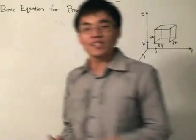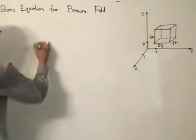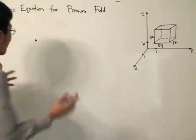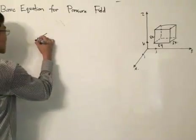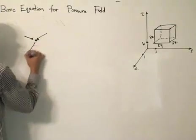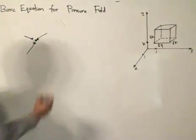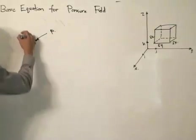We left off previously where we showed that pressure at a point in a liquid is the same regardless of direction. So whether it's the force acting in this direction, this direction, or this direction, the pressure is all the same, which we label as P.